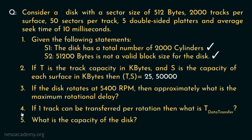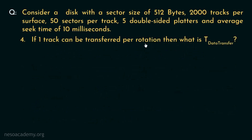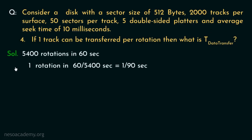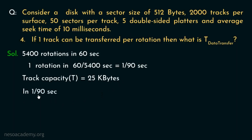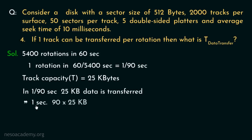Now for question 4: if one track can be transferred per rotation, what is the data transfer rate? One rotation takes 1/90 seconds, and the track capacity is 25 kilobytes. So in 1/90 seconds, 25 kilobytes of data is transferred. Therefore, in one second, 90 × 25 = 2250 kilobytes of data is transferred. This is the data transfer rate.